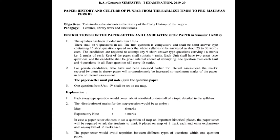The name of the paper is History and Culture of Punjab from the Earliest Times to the Pre-Mauryan Period. The syllabus has been divided into four units. There shall be nine questions in all. The first question is compulsory and shall be short-answer type, containing 15 short questions spread over the whole syllabus, to be answered in about 20-30 words each. Candidates are required to attempt any nine short-answer questions carrying 18 marks, two marks each. The rest of the paper shall contain four units.